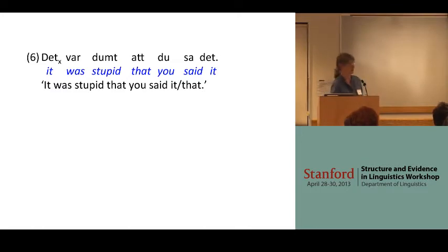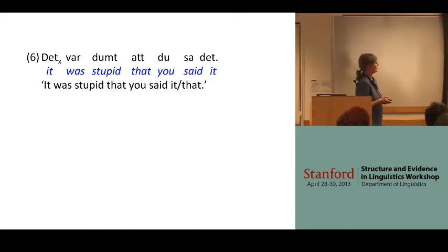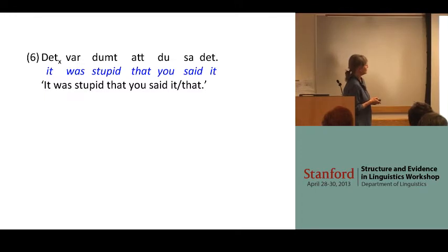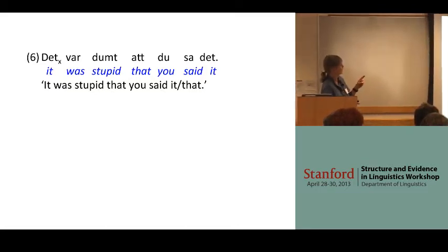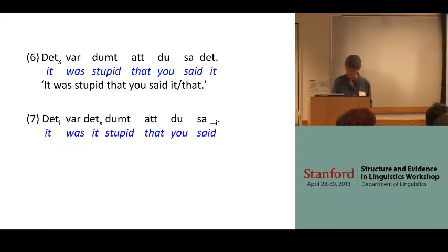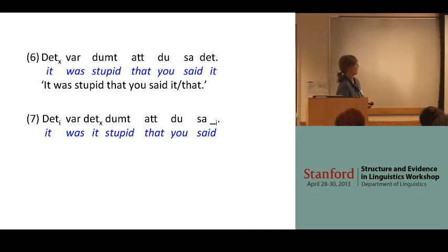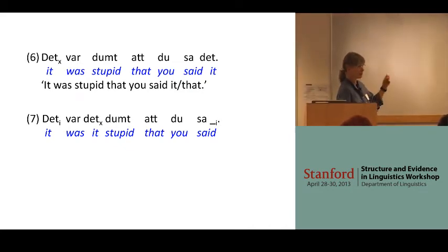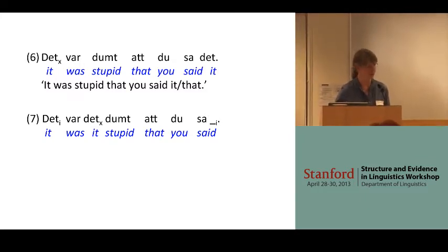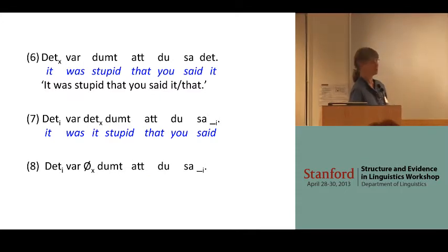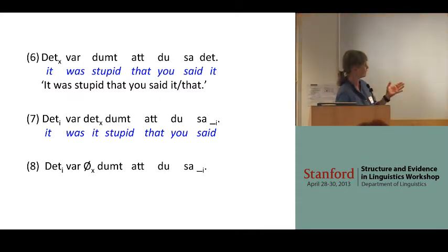So if we go back and look at this sentence without any frontings, it should be something like in six: 'Det var dumt att du sa det,' starting off with the expletive, which I've marked with a little 'x' to make it clear. And then you have the extraposed clause 'that you said it.' And then when we front, we get seven: 'Det var det dumt att du sa,' with two dets, one referential and one expletive. The problem is people don't say this. They say 'Det var dumt att du sa,' which then looks like there is a null expletive in the subject position.